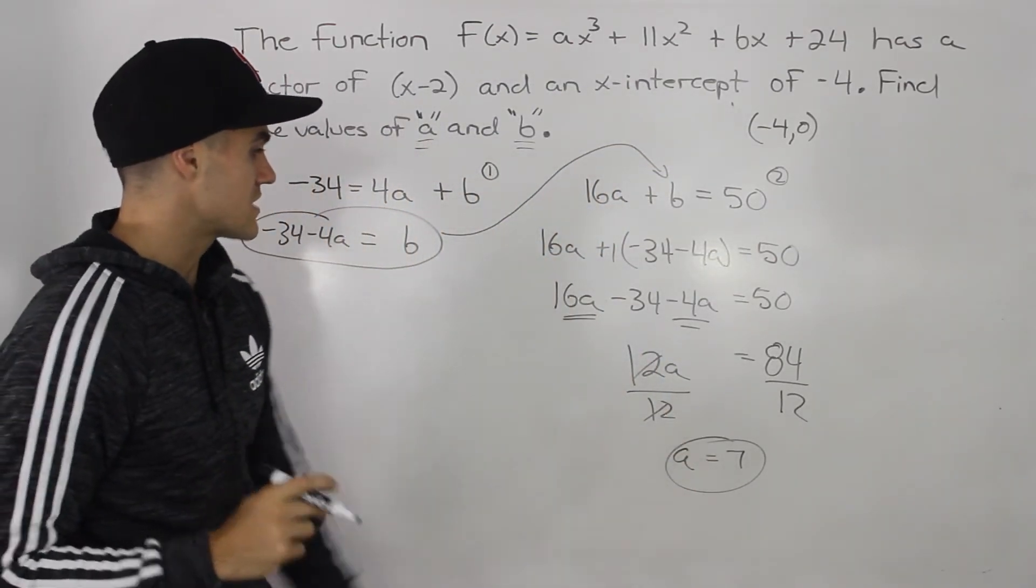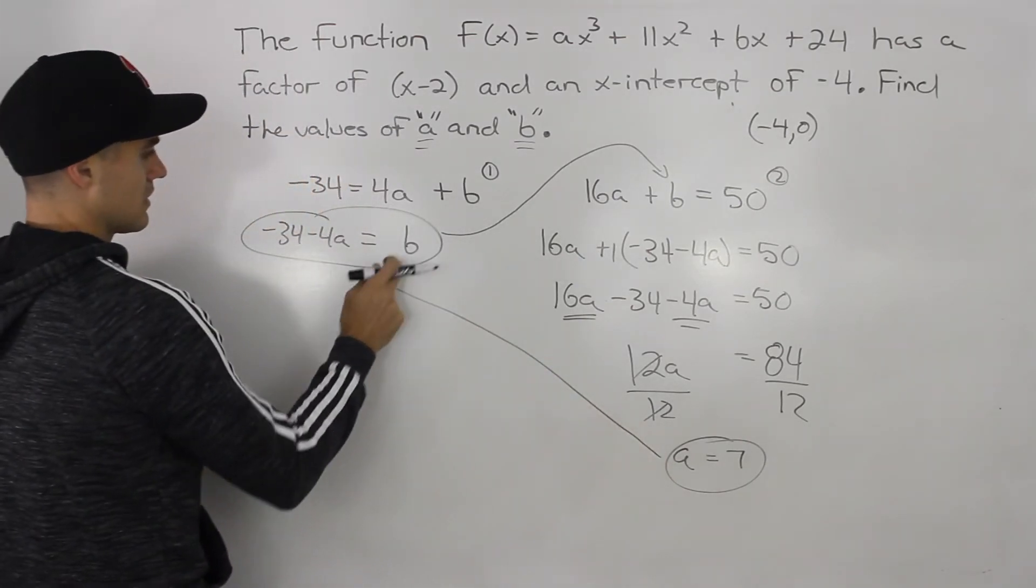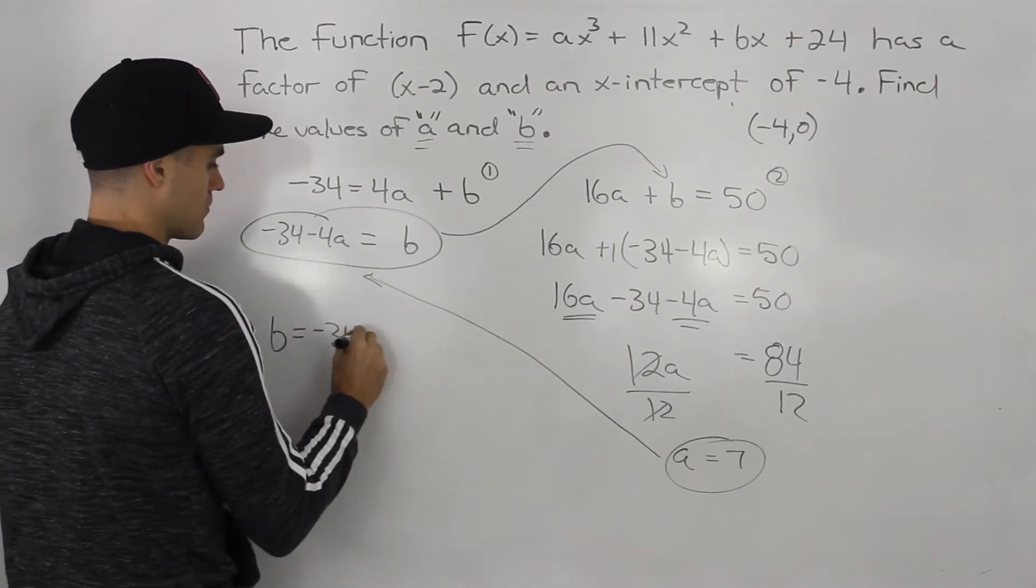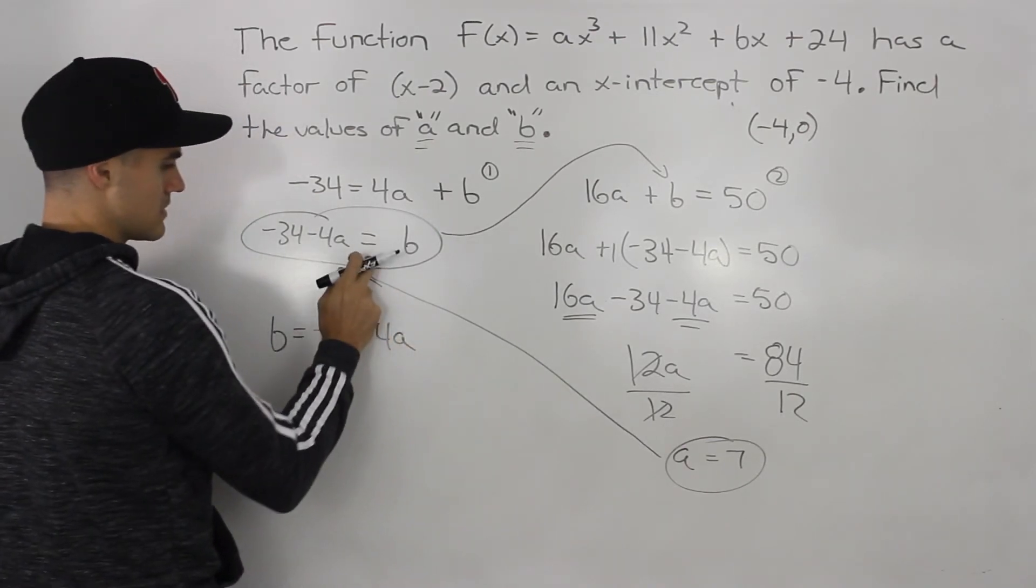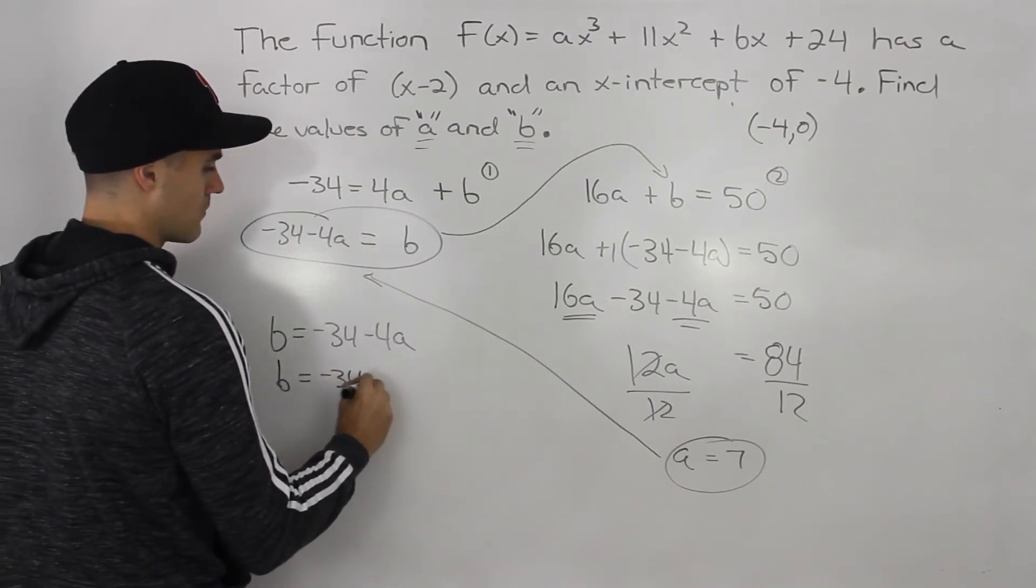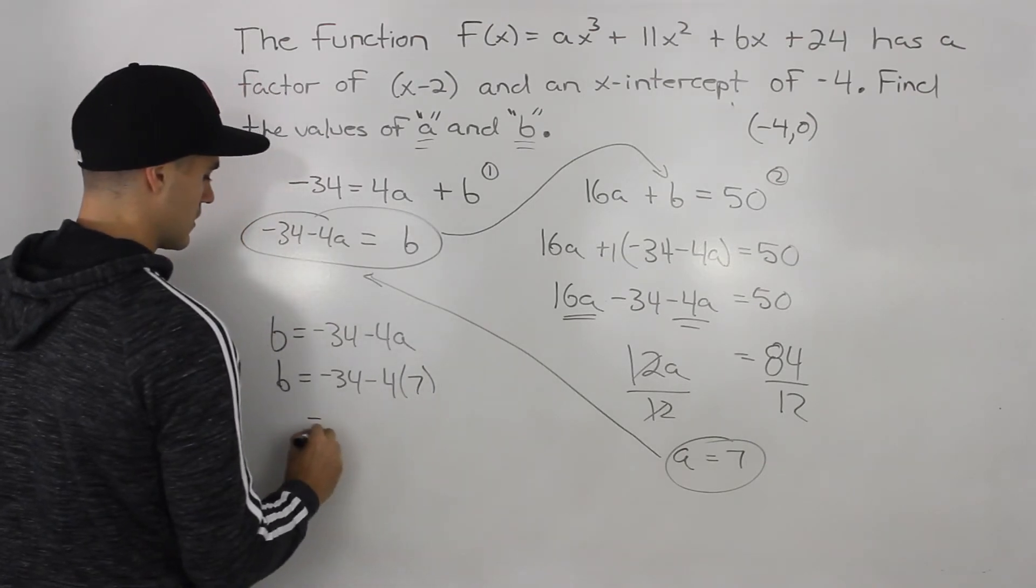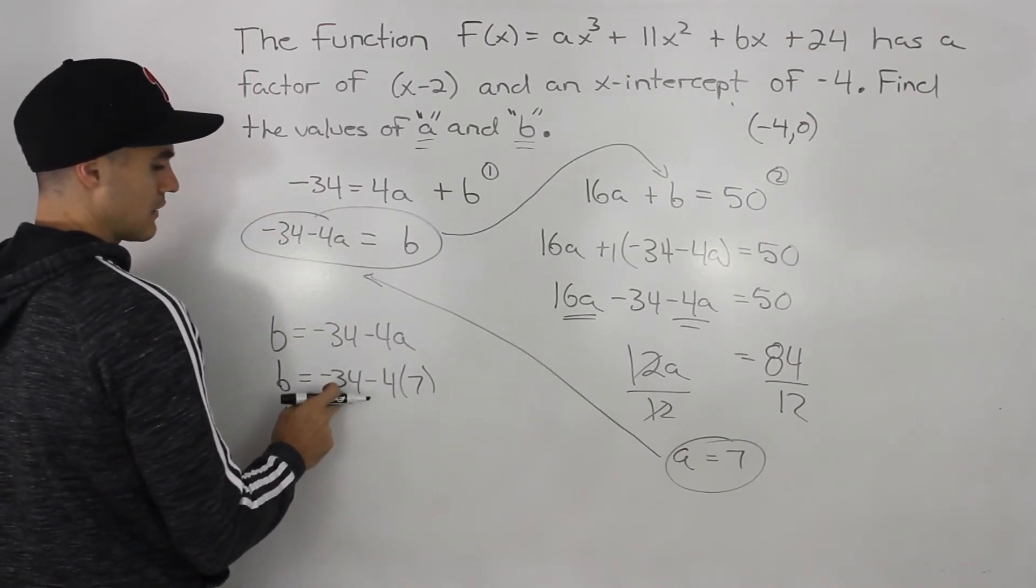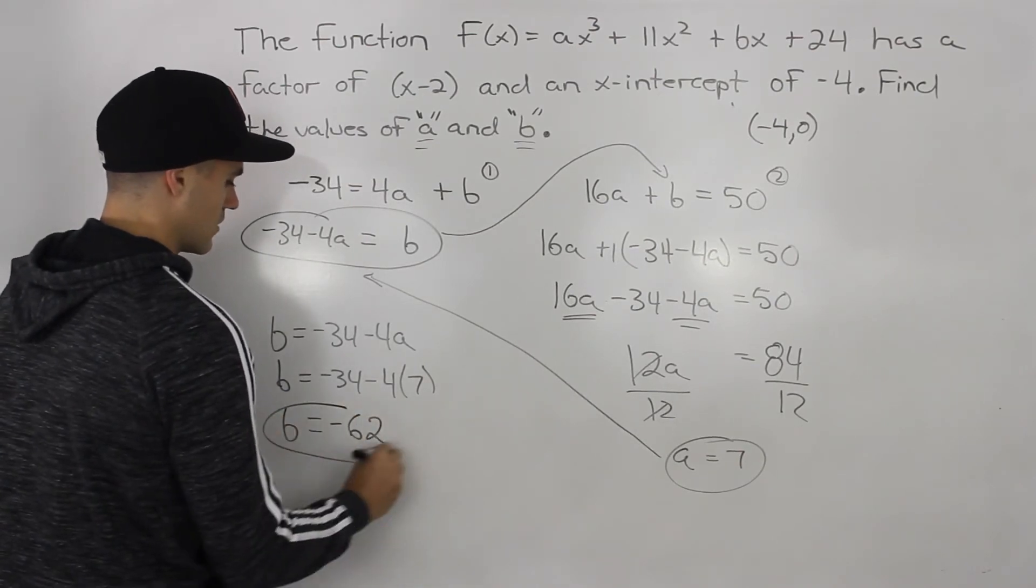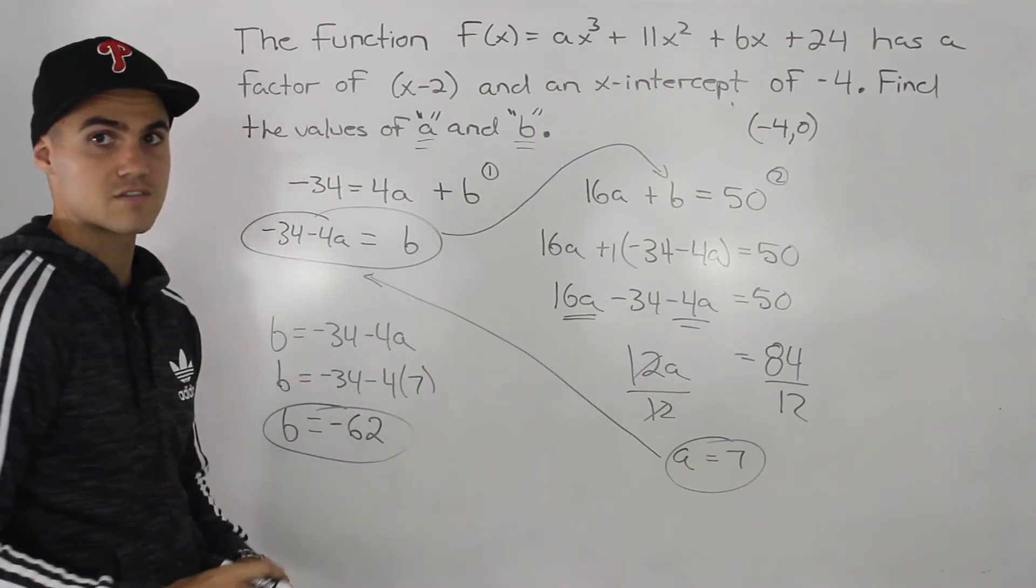So now a is equal to 7. We can take that a value and then plug it in here and solve for our b value. So our b value is equal to negative 34 minus 4a, right? This expression that we had up here. So b equals negative 34 minus 4 times a value of 7. And when you end up doing that negative 34 minus 28, that would give you negative 62. So our a value is 7. Our b value is negative 62. Those are your final answers.